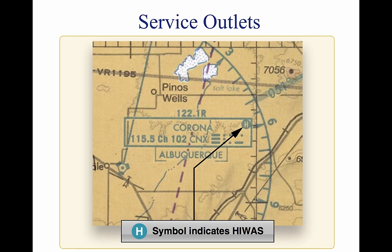The AFSS is the primary source for preflight weather information. A preflight weather briefing from an AFSS can be obtained 24 hours a day by calling 1-800-WX-BRIEF from almost anywhere in the United States. The Transcribed Information Briefing Service is a service prepared and disseminated by selected AFSS. It provides continuous telephone recordings of meteorological and aeronautical information. Specifically, TIBS provides area and route briefings, airspace procedures, and special announcements.